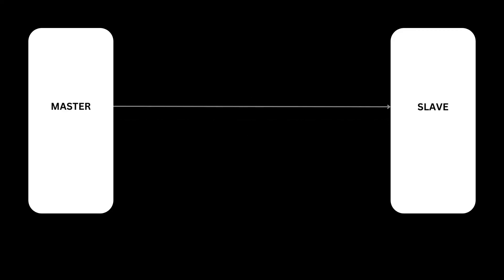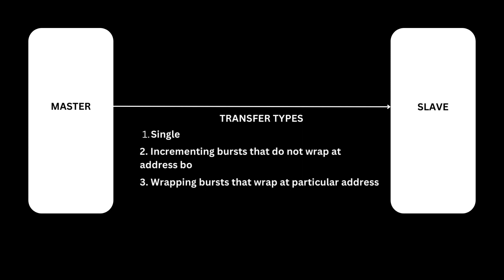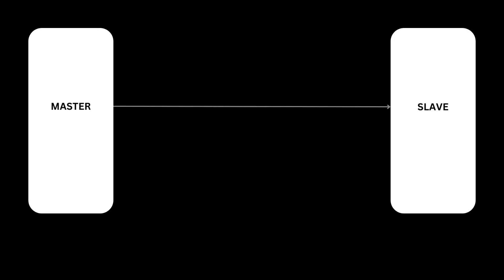Transfers can be single, incrementing bursts that do not wrap at address boundaries, or wrapping bursts that wrap at particular address boundaries. The write data bus moves data from the master to a slave, and the read data bus moves data from a slave to the master.